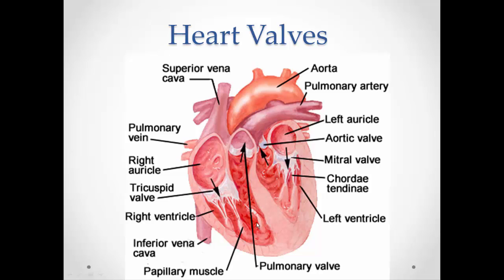Looking at the valve diagram, here is the pulmonary semilunar valve and a portion of the aortic semilunar valve, as well as the mitral and tricuspid valves with their cusps visible. The chordae tendineae are the little strings connecting the valve cusps to the papillary muscles.